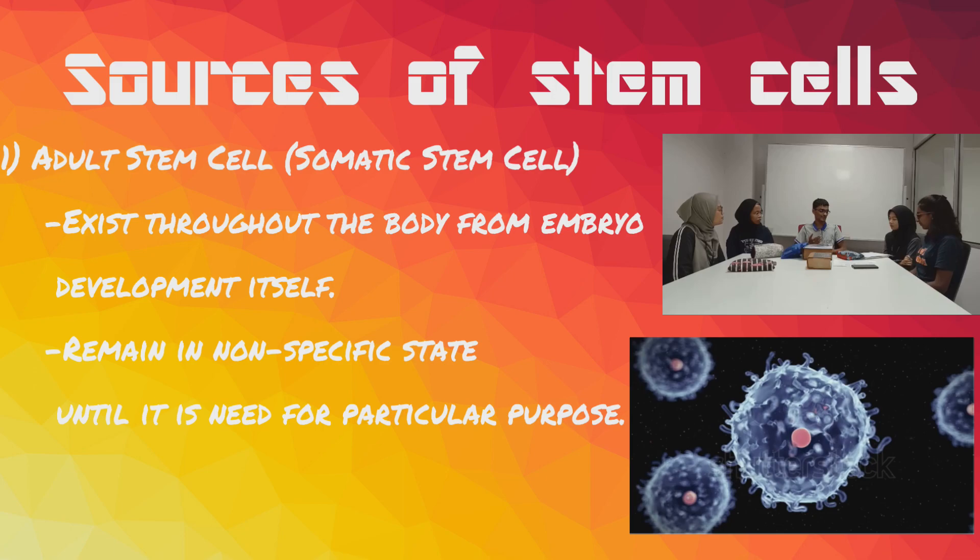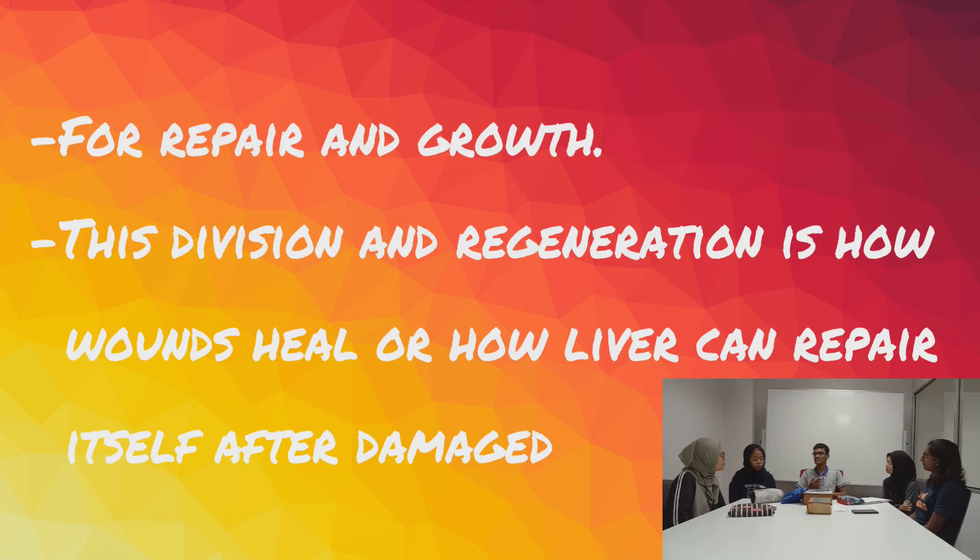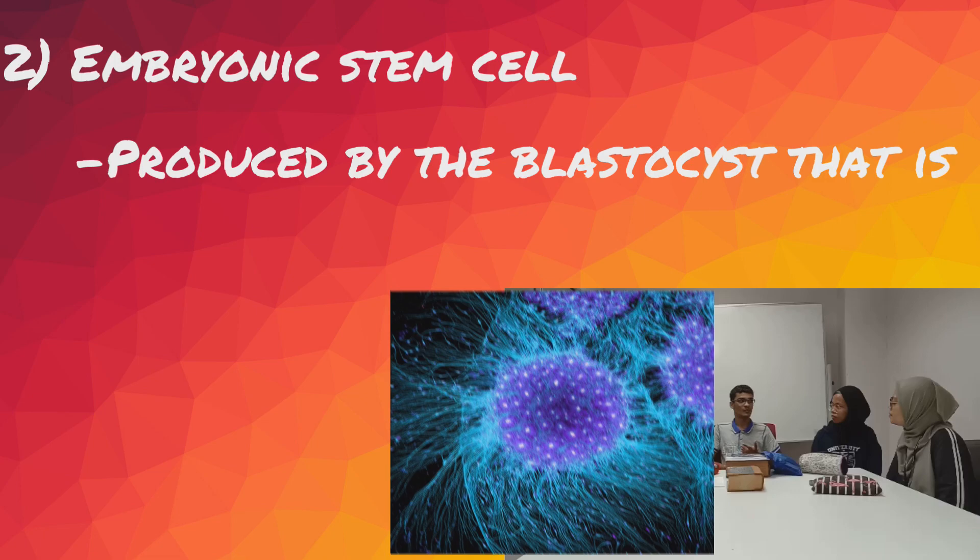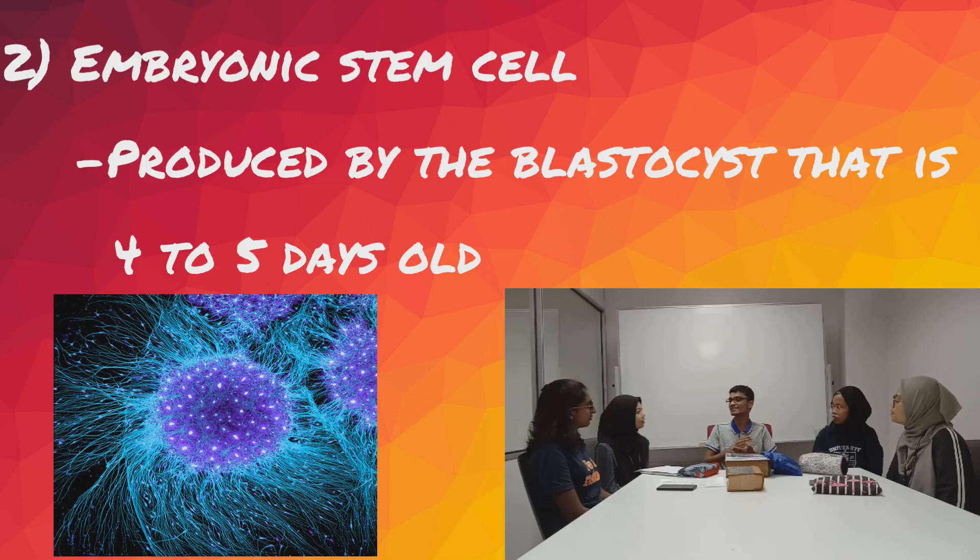We have two main sources of stem cells. The first is the adult stem cell, also known as the somatic stem cell, whose function is for growth and repair. The second source is the embryonic stem cell, produced during the earliest stage of pregnancy, around three to five days, produced by the blastocyst at about four to five days. There are also two more minor sources of stem cells.